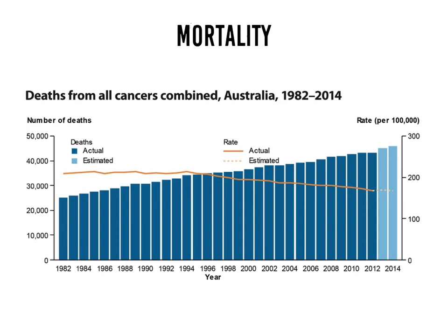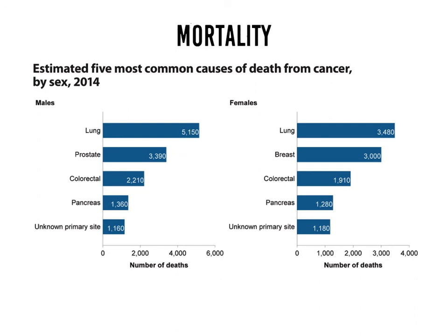Looking at cancer, deaths from cancer have taken a slight, gradual fall since 1995. When comparing males and females for cancer mortality, both are affected by lung cancer, but more males are likely to be affected. Breast cancer obviously affects females more, while prostate cancer affects males. Colorectal cancer and pancreatic cancer clearly affect more men than females, and cancer of unknown primary site is about the same for males and females.